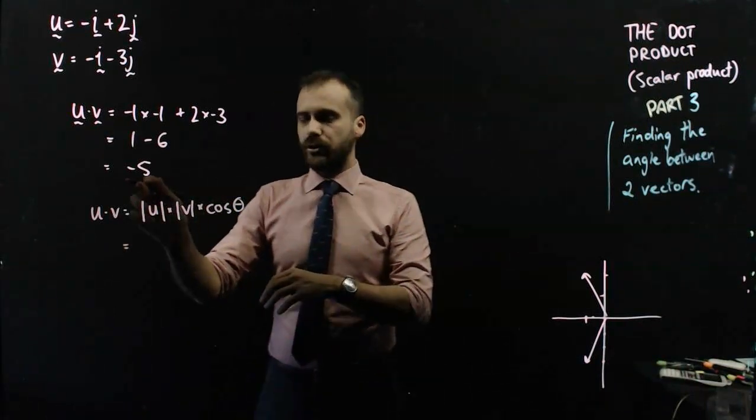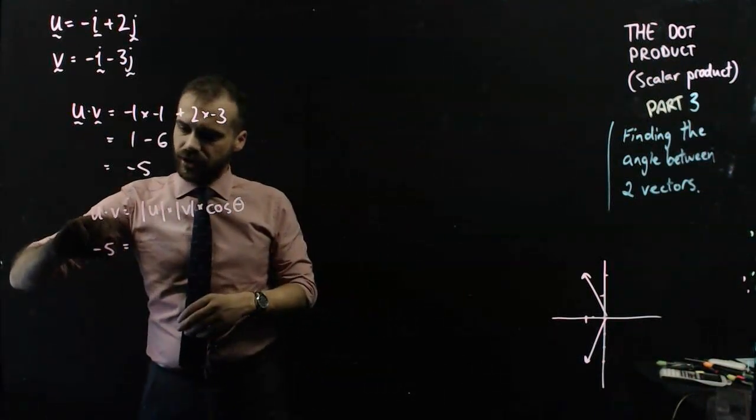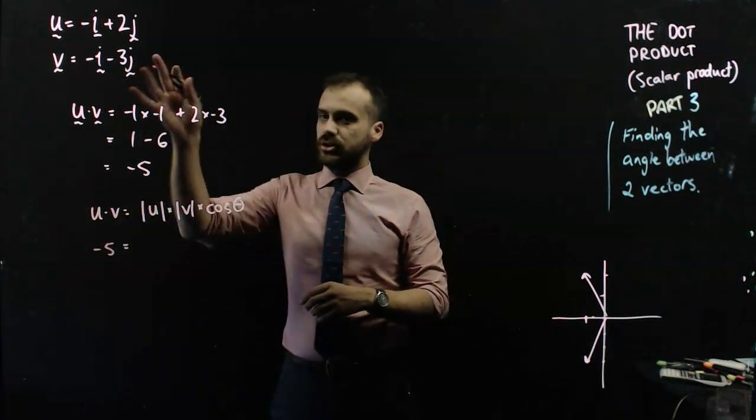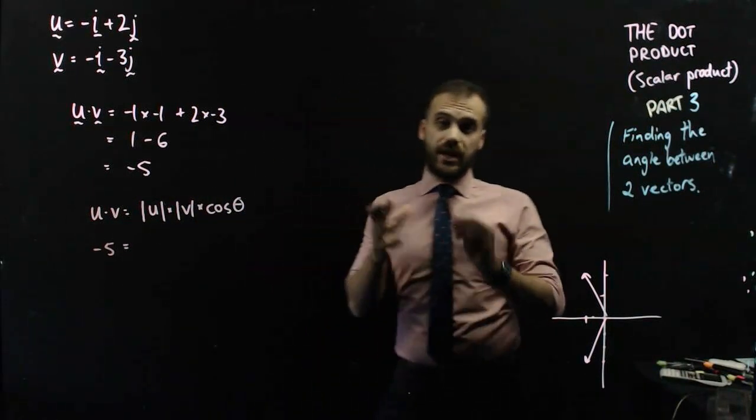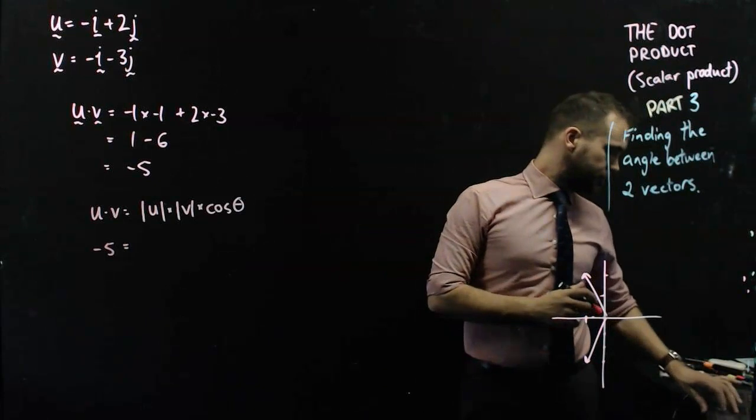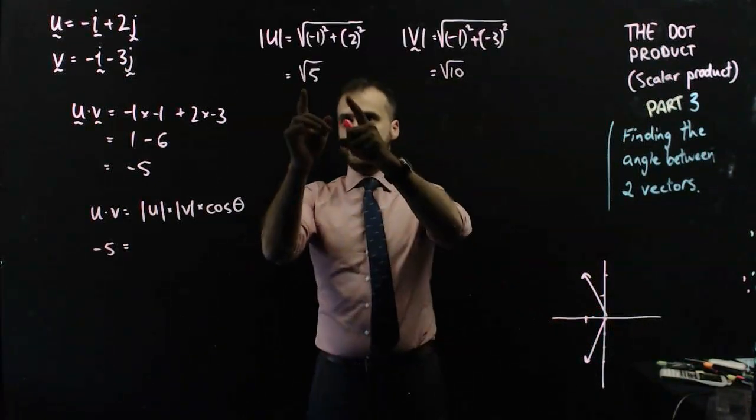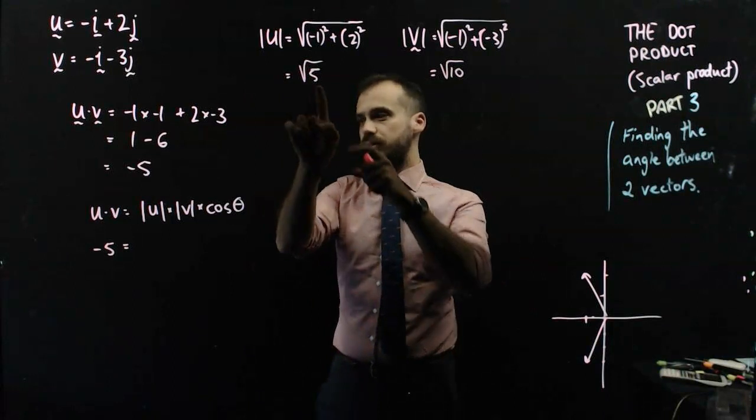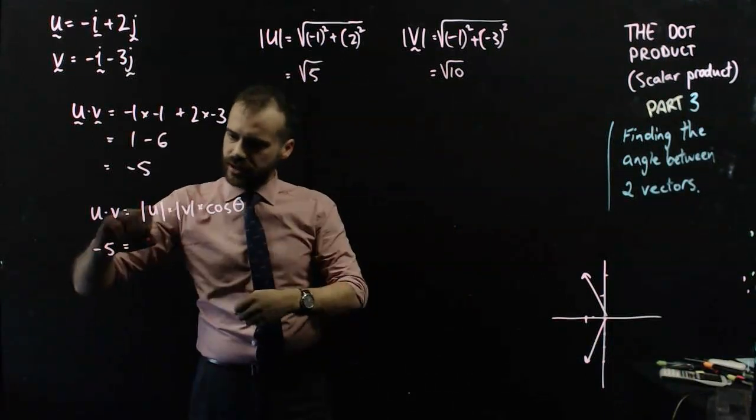I already know that the dot product is negative 5. And if I knew the magnitude of u and the magnitude of v, that would be very handy. So, I've figured out my magnitudes. That was pretty fast. The magnitude of u is root 5, so I can put that in there.